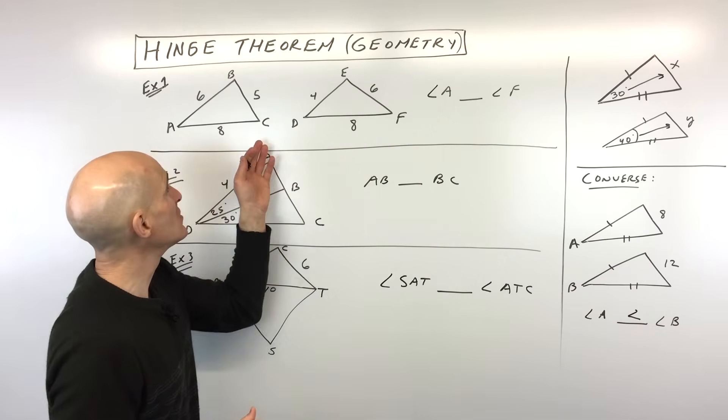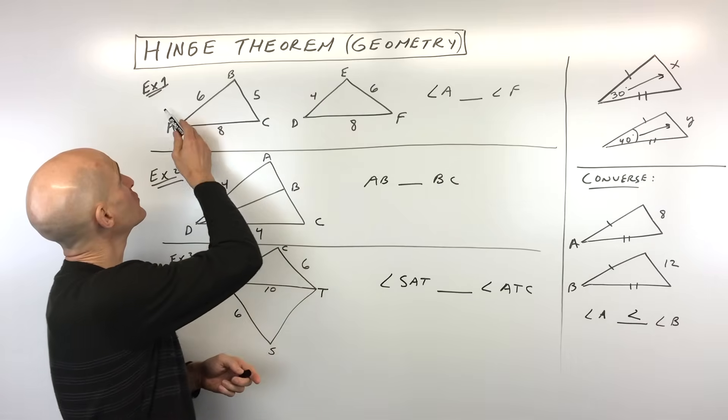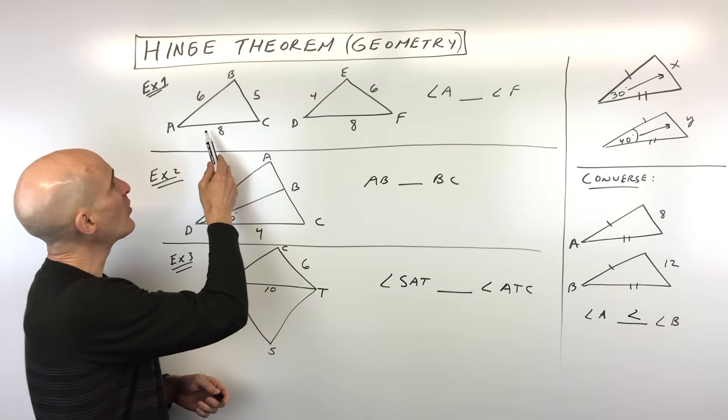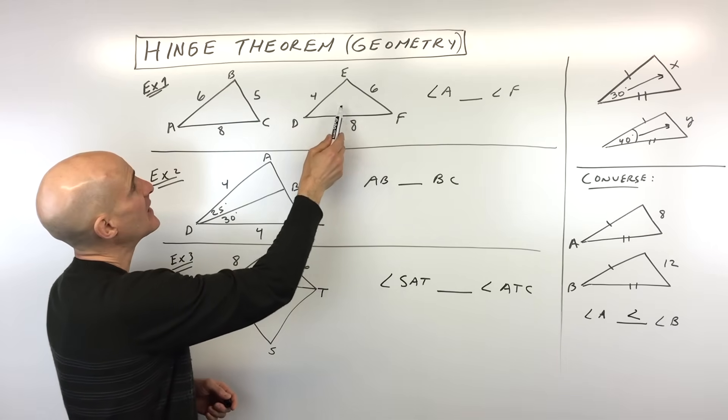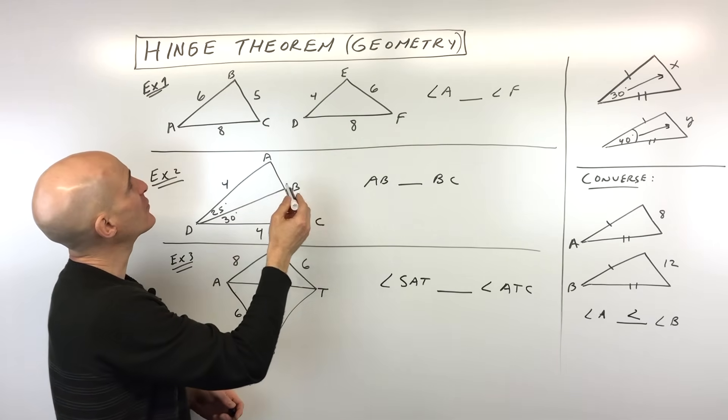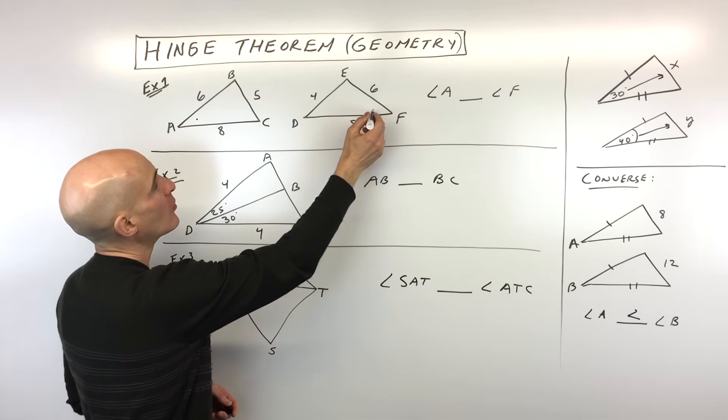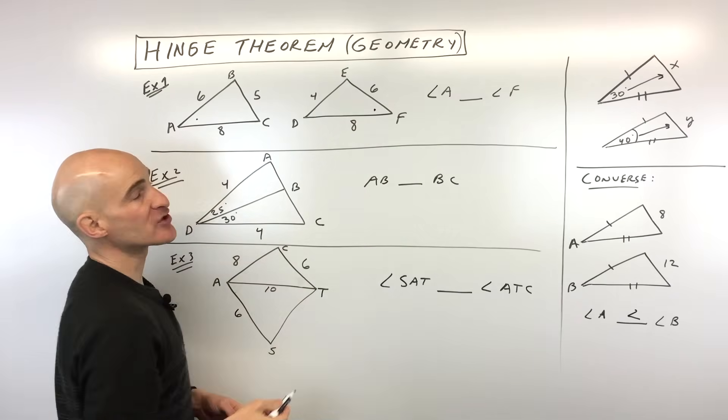So let's jump into some examples, see if you can do these, and we'll go over them. So this first one, example one, look at what we've got. We've got a 6, 8, and 5, 6, 8, and 4, and we're trying to figure out is angle A larger or angle F larger. We're comparing those two.